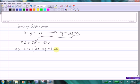Now my goal is to solve this equation for X. So I'm first going to multiply and distribute the 12, so that gives me 9X plus 1200 minus 12X equals 1125.